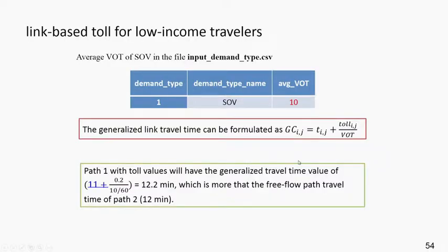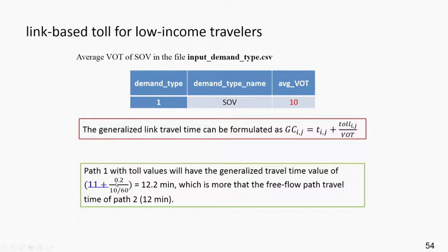How does the simulator account for this 0.2 dollar toll? Using generalized link travel time, the formula is: generalized link travel time equals travel time on link i to j, plus the toll value divided by value of time. For demand type 1 with an average value of time of 10 dollars per hour, the calculation is: 11 minutes plus 0.2 dollars divided by 10 dollars per hour, further divided by 60 minutes per hour, giving 12.2 minutes — which is more than the free flow travel time of path two at 12 minutes.